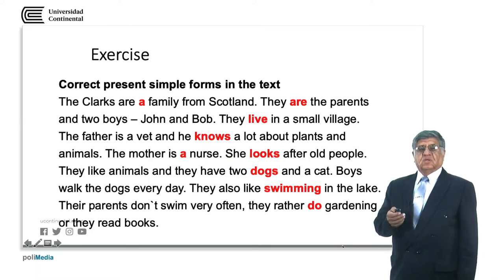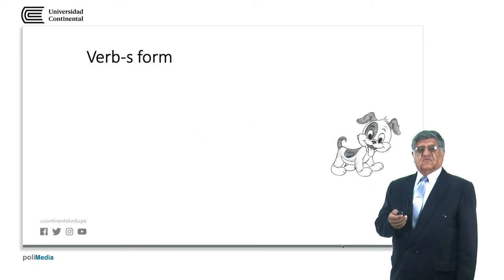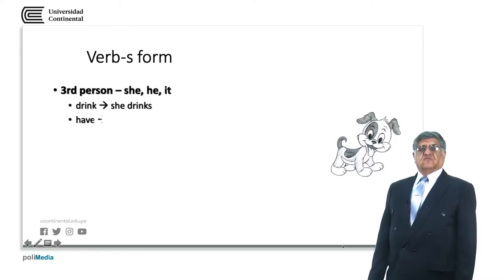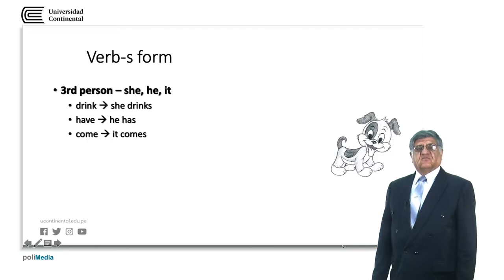Please remember, we need to use the appropriate form after the subject. The third person singular normally with an S or ES or whatever. And other forms in the simple form, in the infinitive form. When do we use the verb forms or how can we make these verb forms? We use the verb form with an S for the third person singular: she, he or it. Drink, she drinks. Have, he has. Come, it comes. As you can see, drink and come are regular verbs because they need just S or ES at the end.